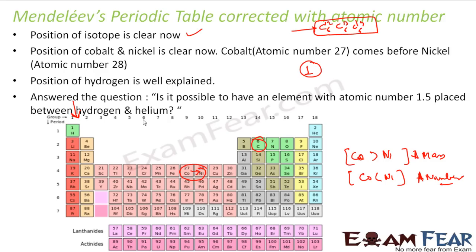Another question answered: is it possible to have an element with atomic number 1.5, between hydrogen and helium? The answer is no, because atomic number is a natural number, and there is no natural number equal to 1.5.